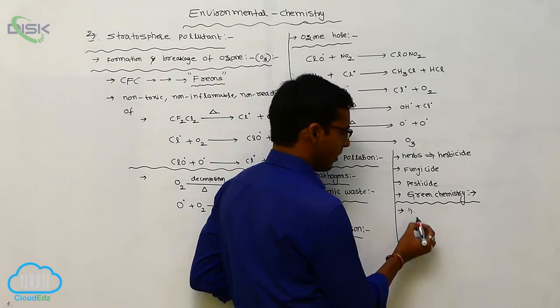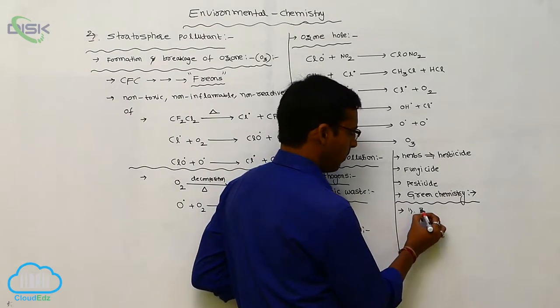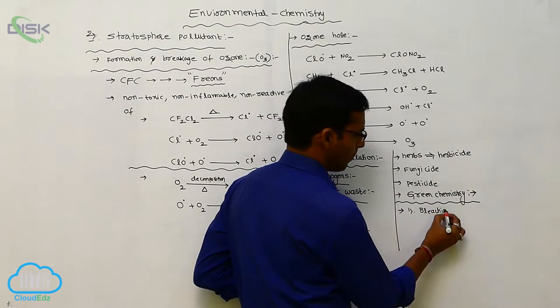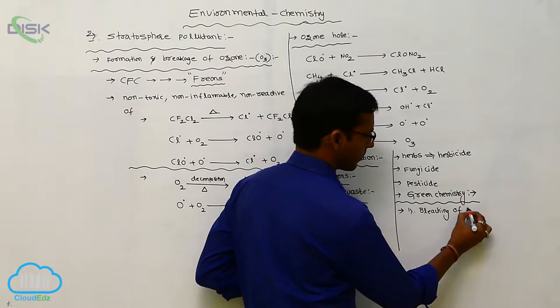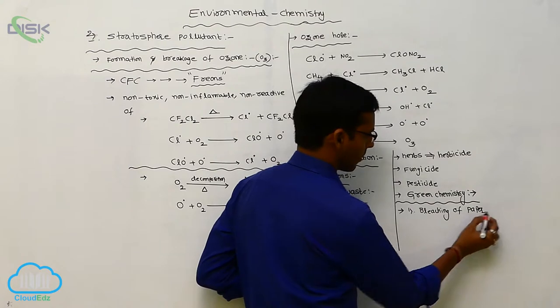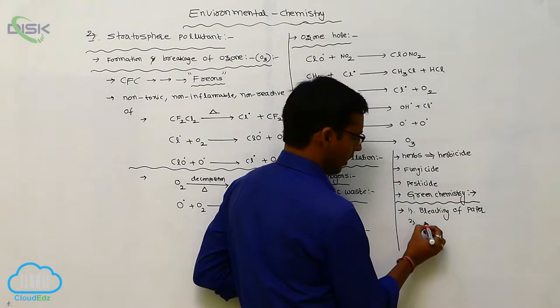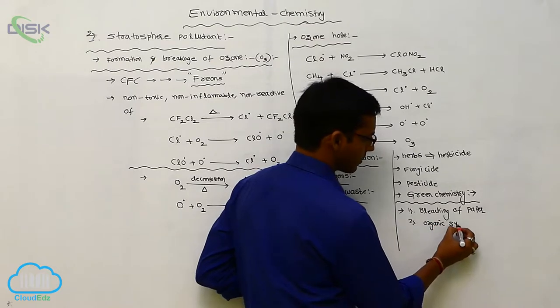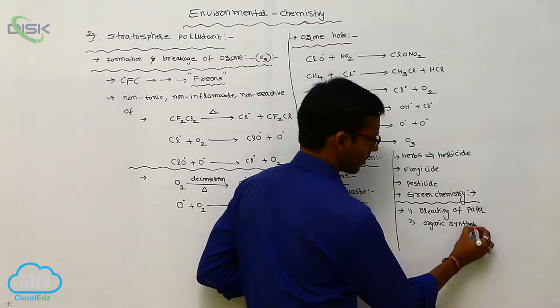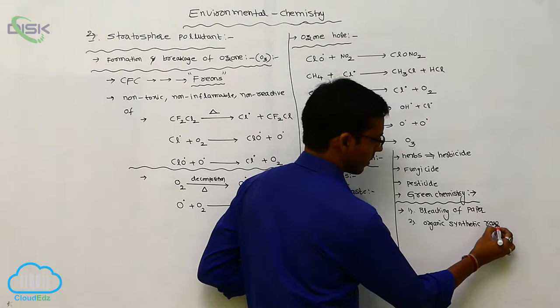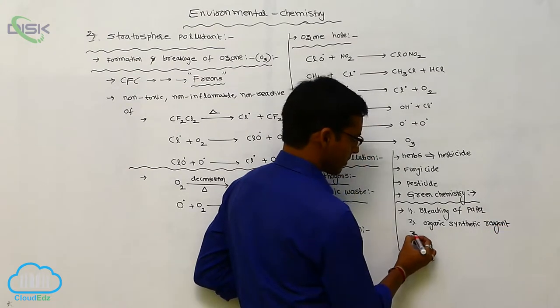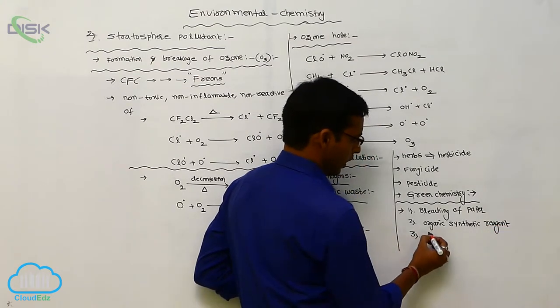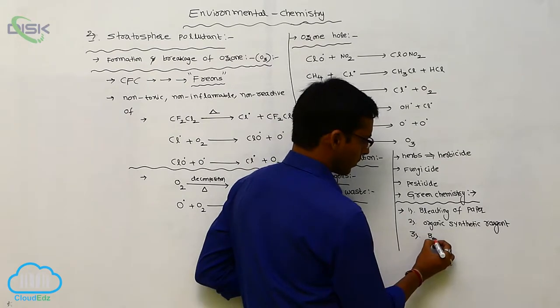Green chemistry acts as bleaching of paper or organic purposes, organic synthetic reagent, and bleaching of cloths.